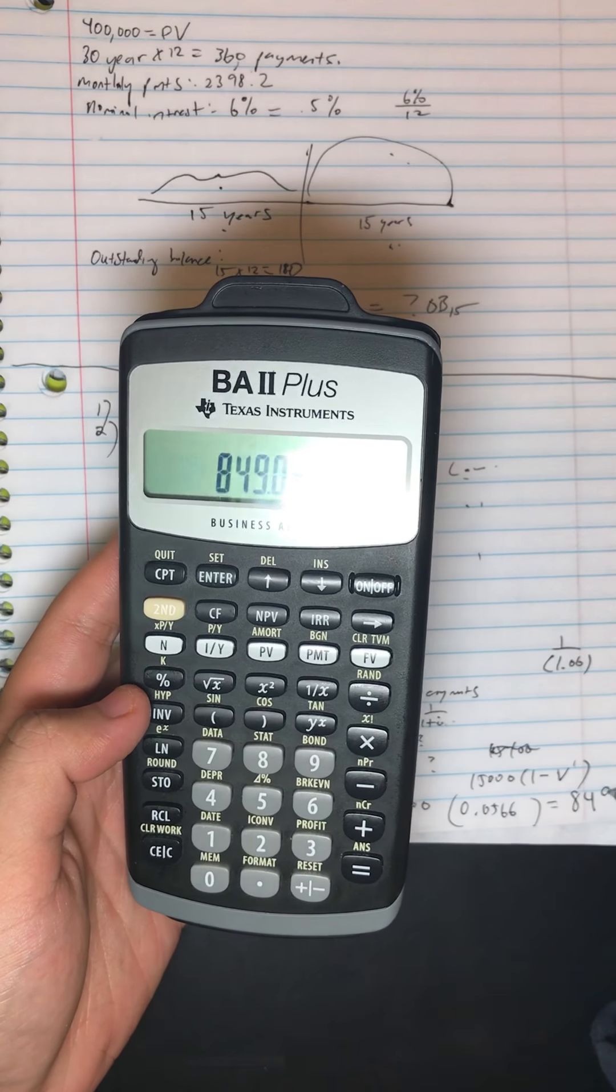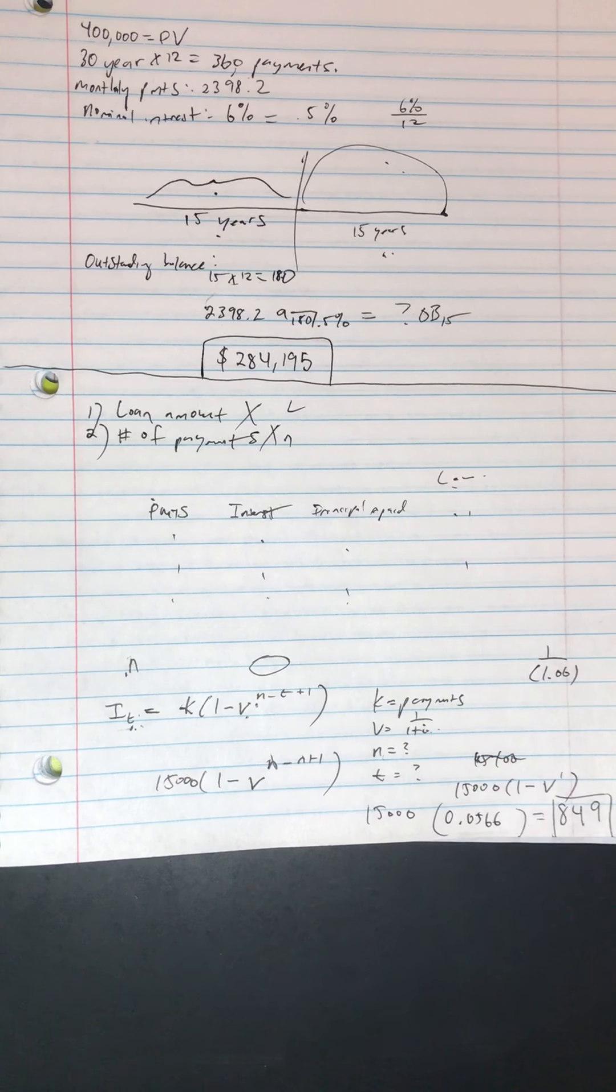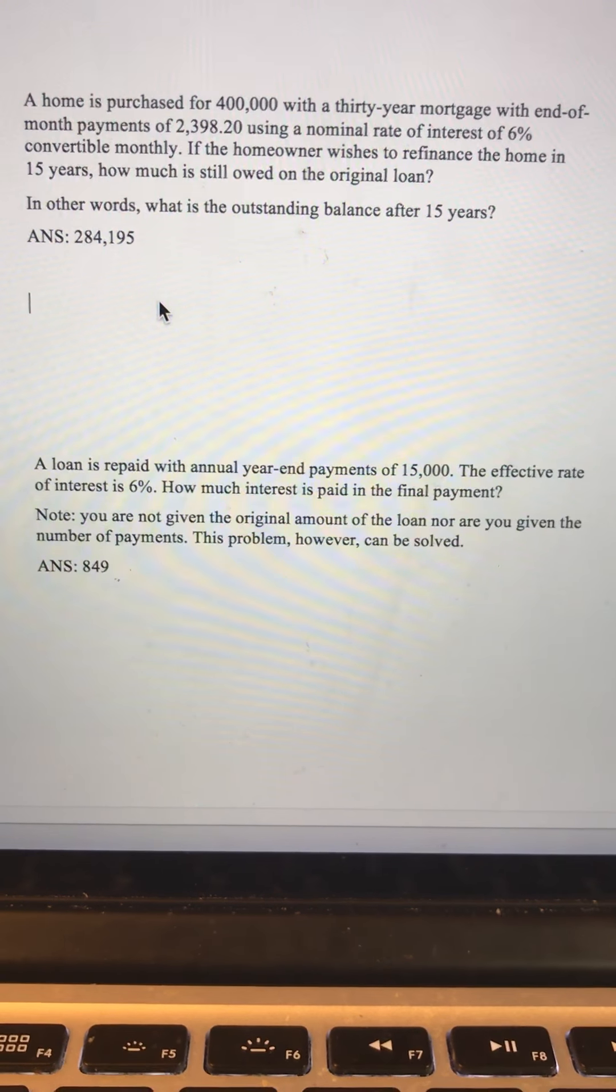And then we multiply that by $15,000 to get us $849. This is the interest that is paid at the final payment, and we have $849 right over there.